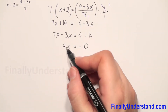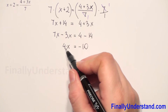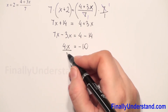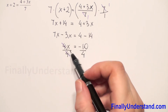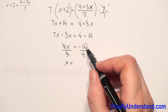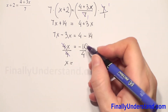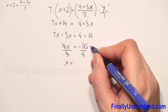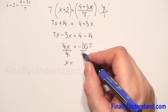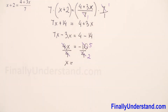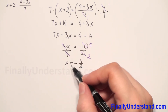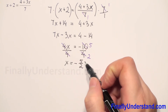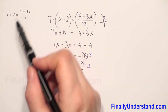Now we have 4x equals negative 10. We have multiplication on the left side, so to find x we have to do division. We divide both sides by 4. The 4s cancel, and on the left side we have only x. 10 and 4 we can reduce also. So we have x equals negative 5 over 2 as the solution for our equation.